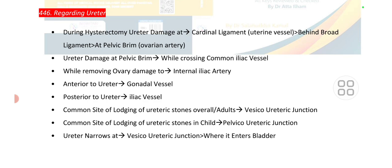While removing the ovary, there is damage to the internal iliac artery because internal iliac vessels are present in the ovarian fossa. Anterior to the ureter are gonadal vessels, and posterior to the ureter are iliac vessels.